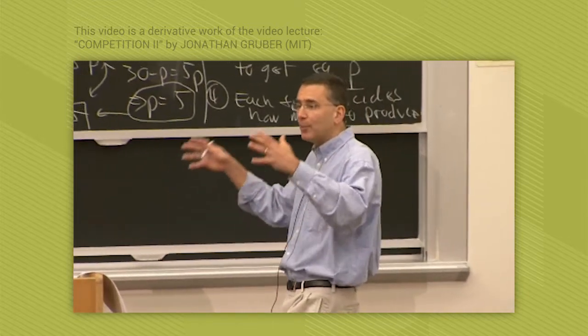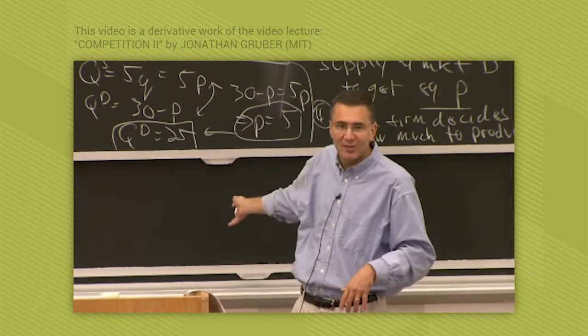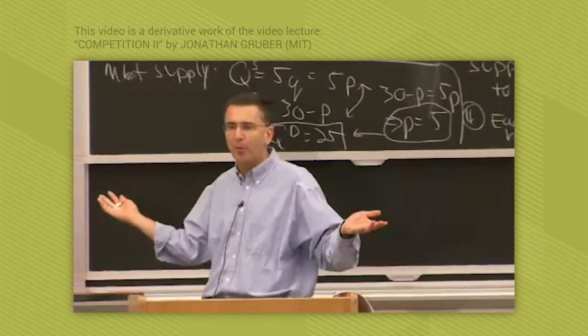This is the power of the perfectly competitive equilibrium. This is why economists love it so much. Because we don't need to go through all this. This is all short run stuff. In the long run, it's easy. You just say, give me a cost function, I'll tell you what the firm will produce.